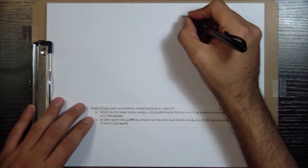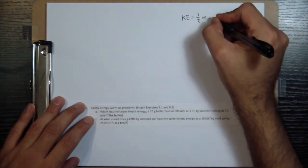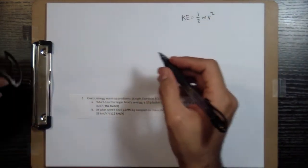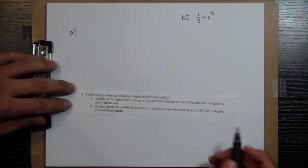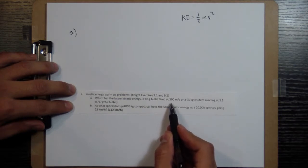So for this, we need to know the definition of kinetic energy, which is one-half times the mass times the speed squared. So if you want to know the kinetic energy for the bullet, then we're going to take the mass, which is 10 grams, and multiply by the square of the speed.